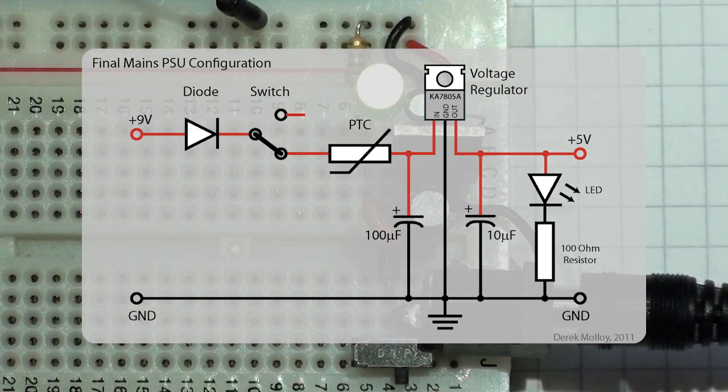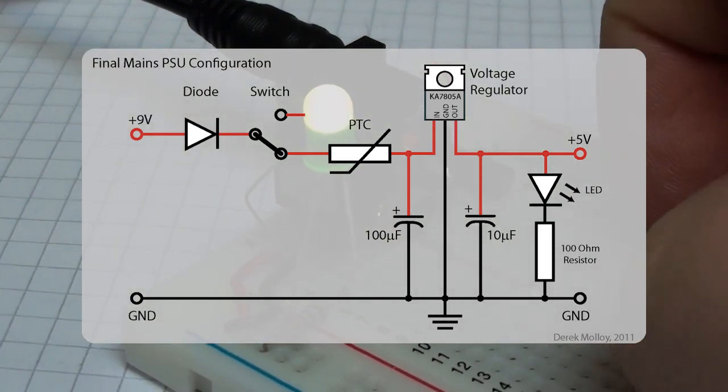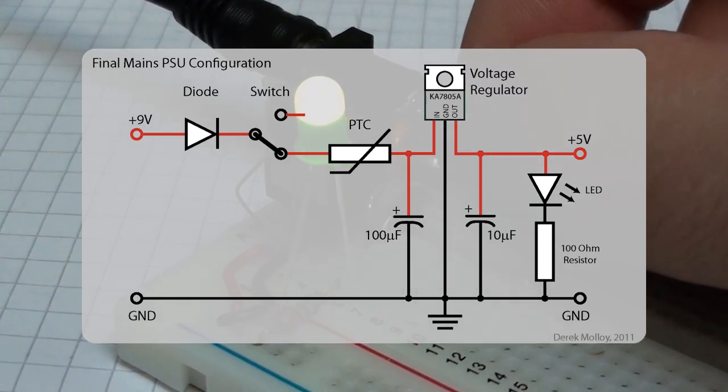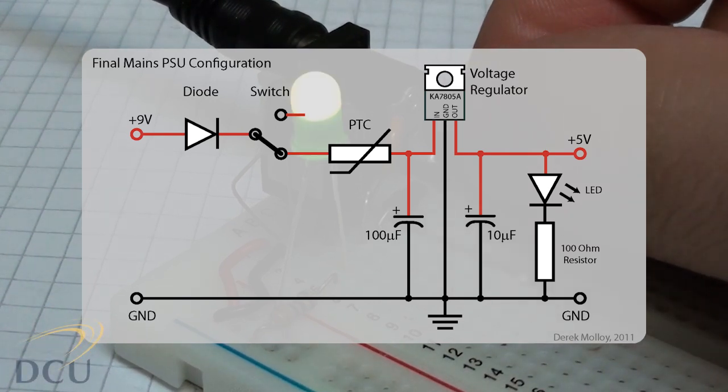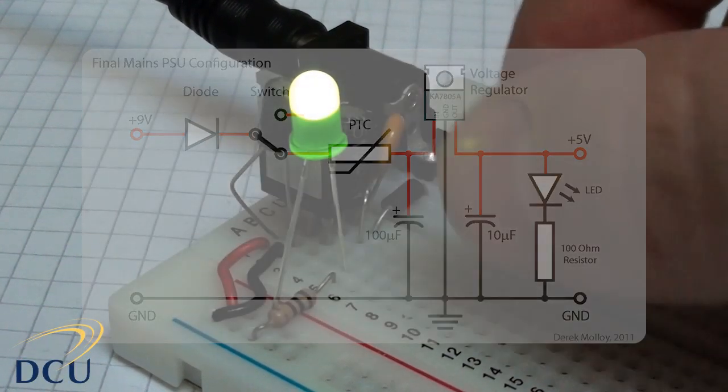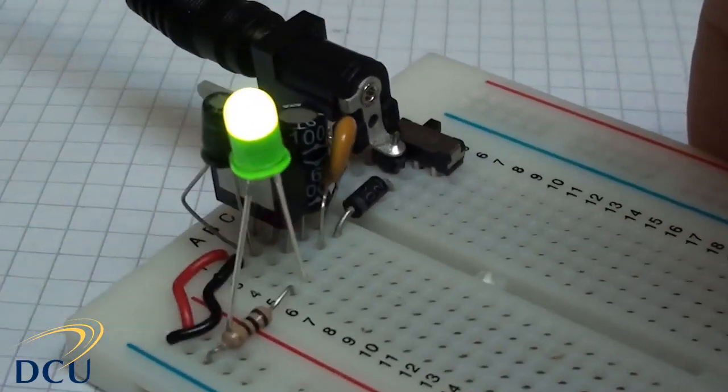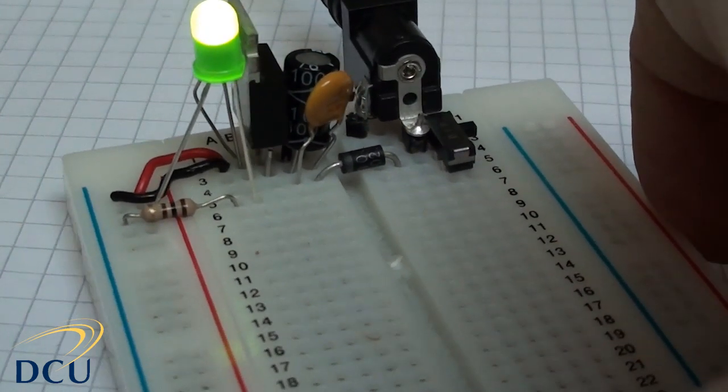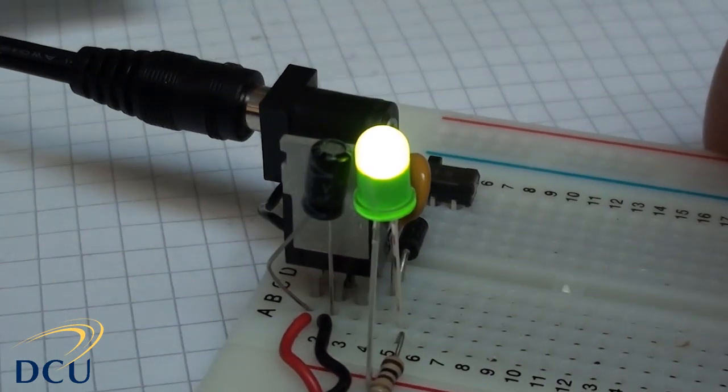These capacitors are electrolytic capacitors which means they have a polarity, a positive and a negative side. You can see this in the diagram referenced by a plus on one side and a curve on the other, but you can also see this on the capacitor itself. They generally have a large strip on the side with a big minus sign so you can't miss it. This is important because if you connect one of these capacitors in the incorrect way it will blow.